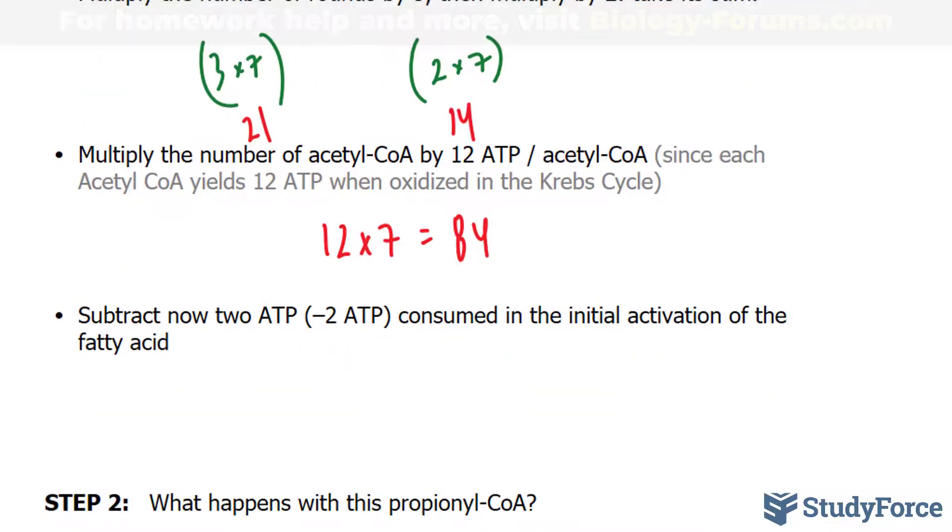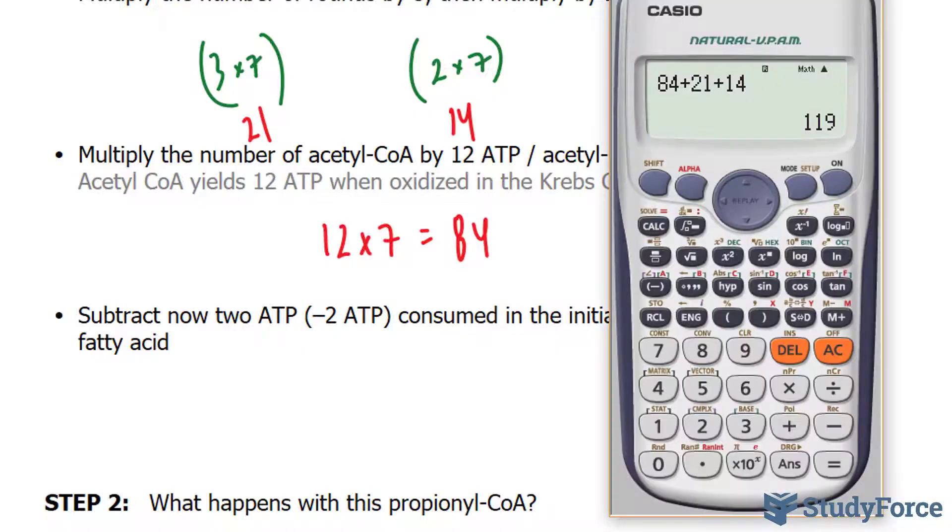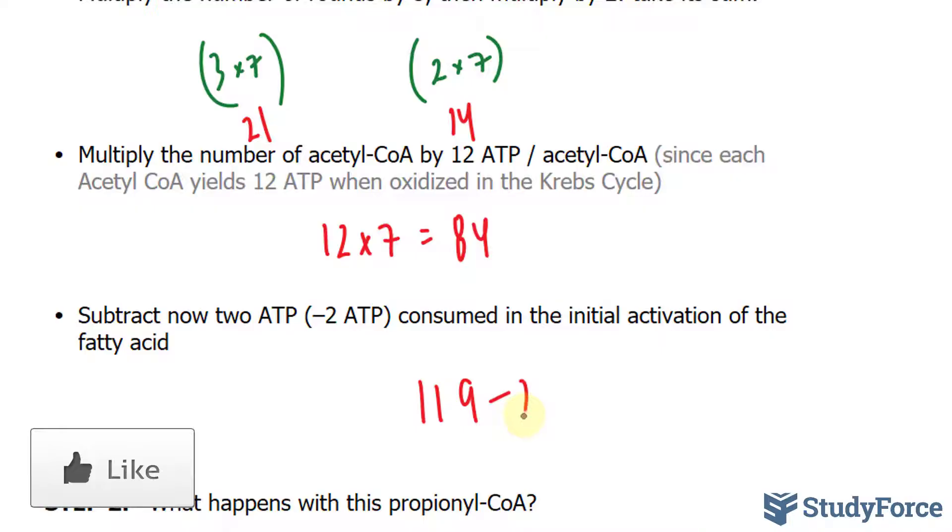Don't forget that in order for beta-oxidation to occur, the fatty acid needs to be activated at the very beginning, and that's equivalent to 2 ATPs. So we'll take our number of 119 and subtract it from 2, which yields 117 ATP molecules.